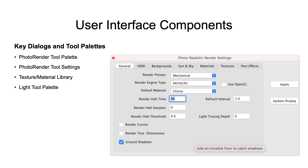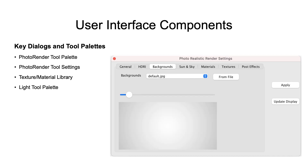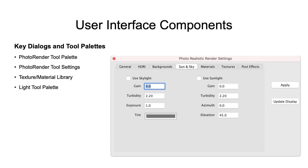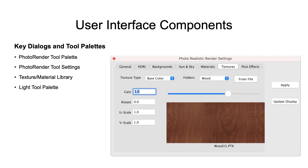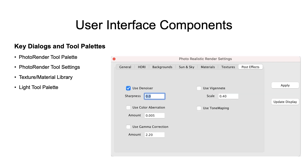The second key user interface item is the render settings dialog, accessed from the last tool icon in the render tool palette. The photorealistic render settings configures all parameters associated with general settings, HDRI, backgrounds, sun and sky lighting environments, materials, textures, and post-processing effects.